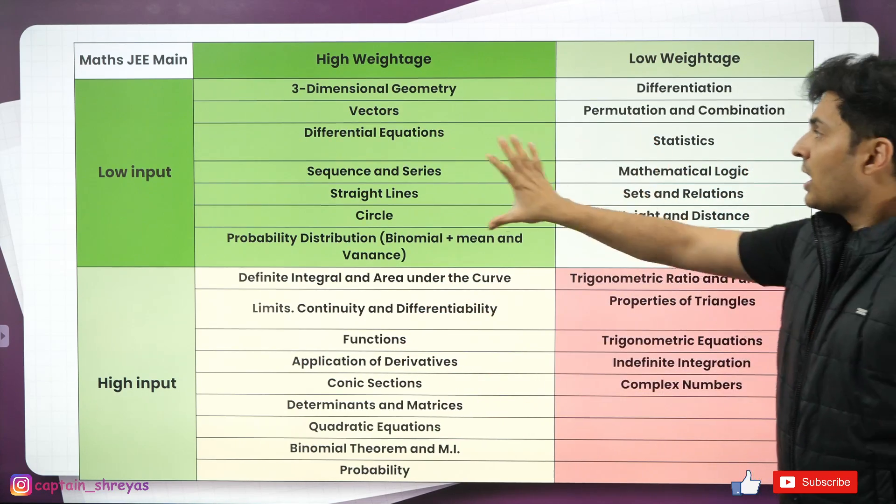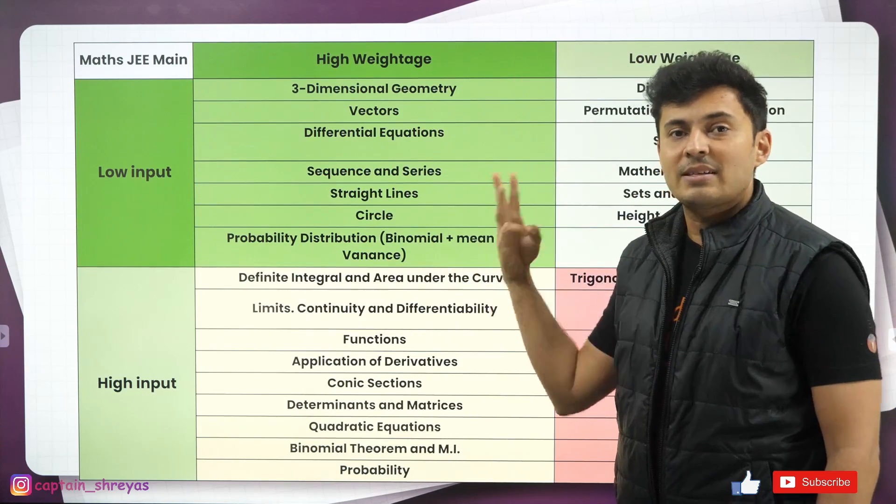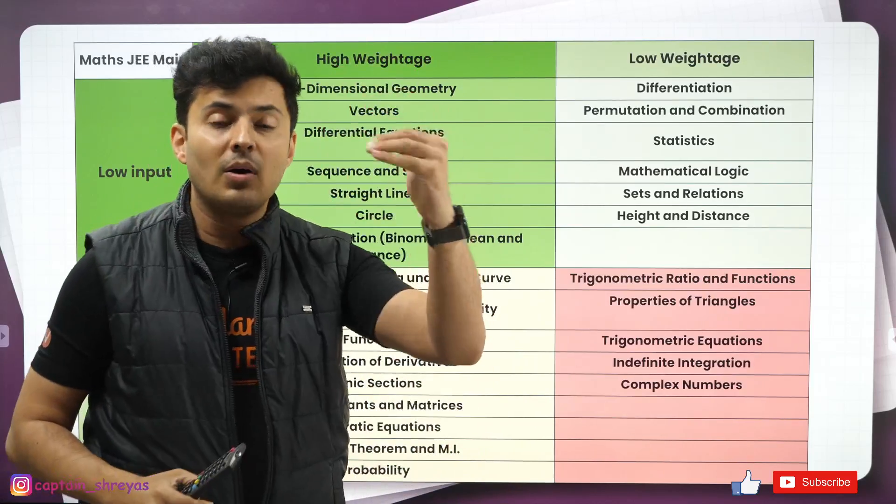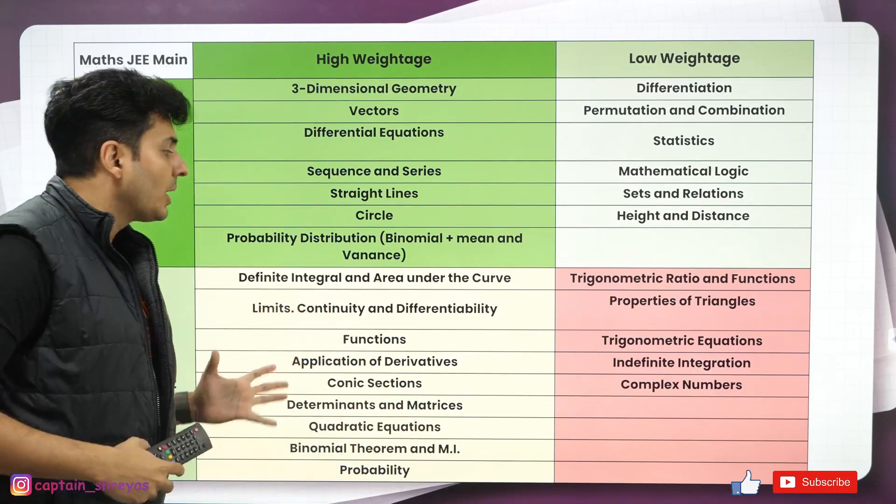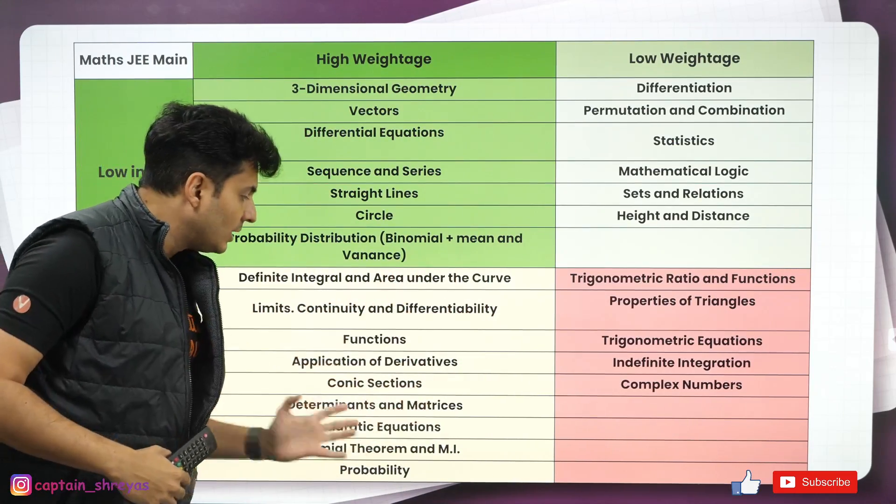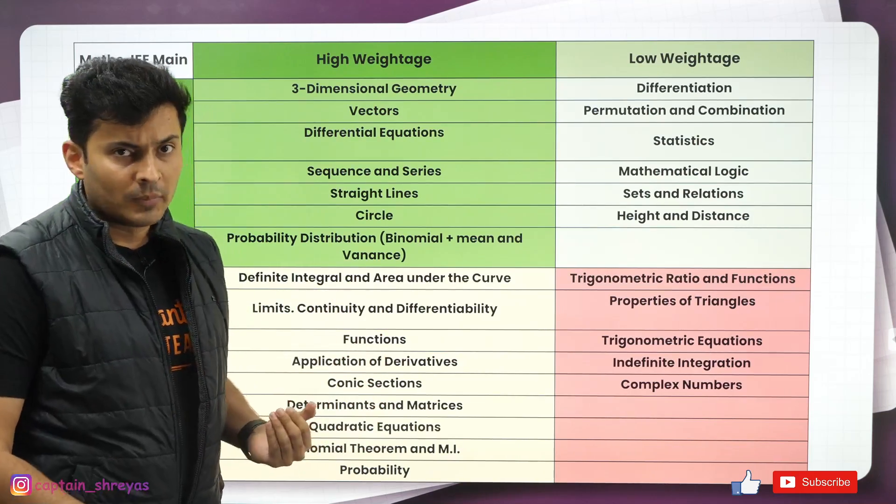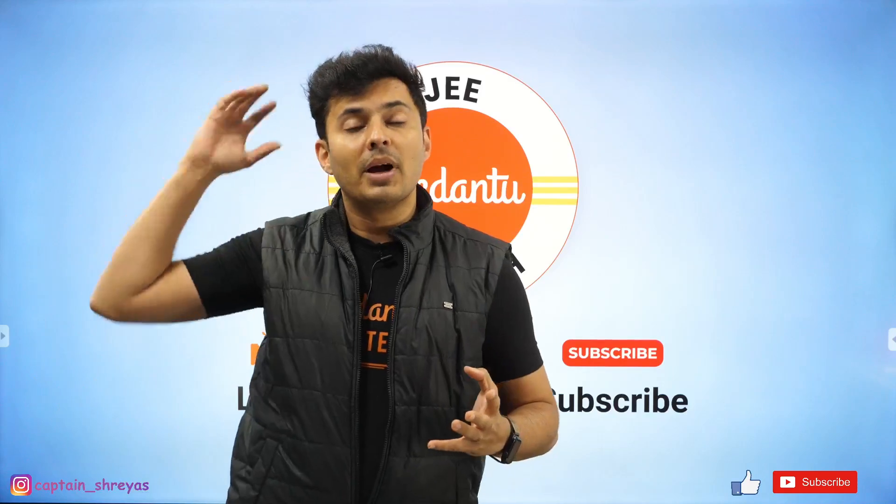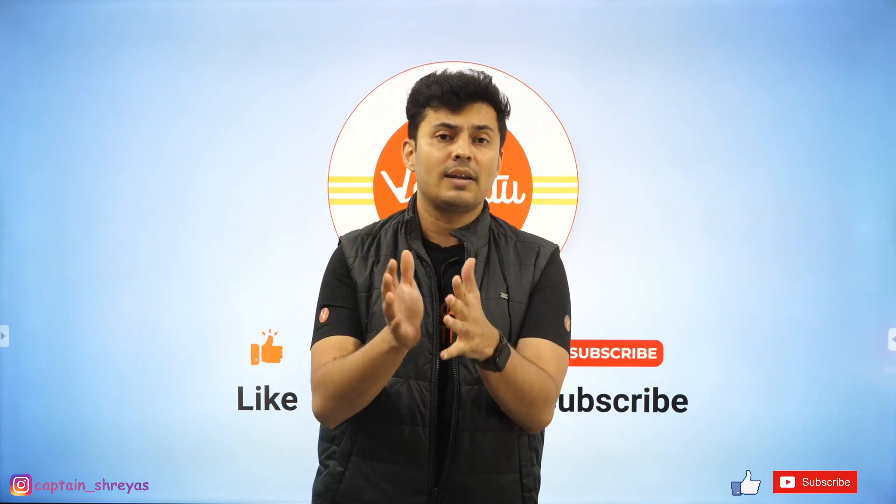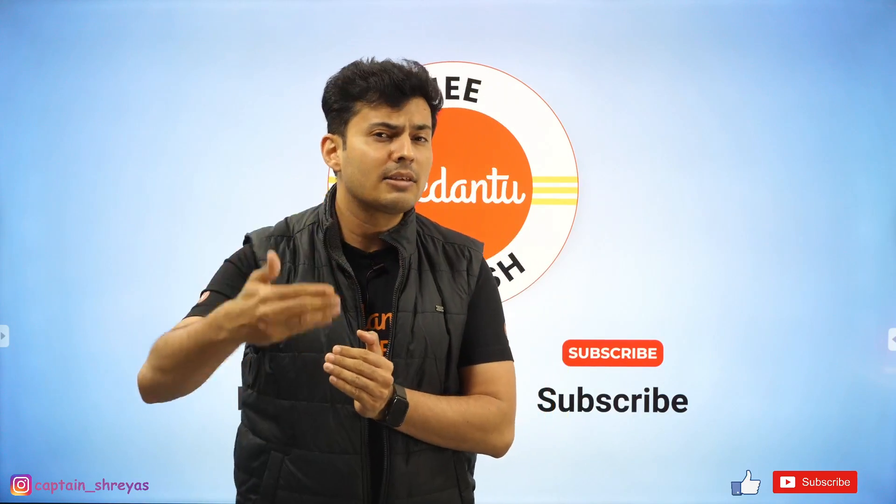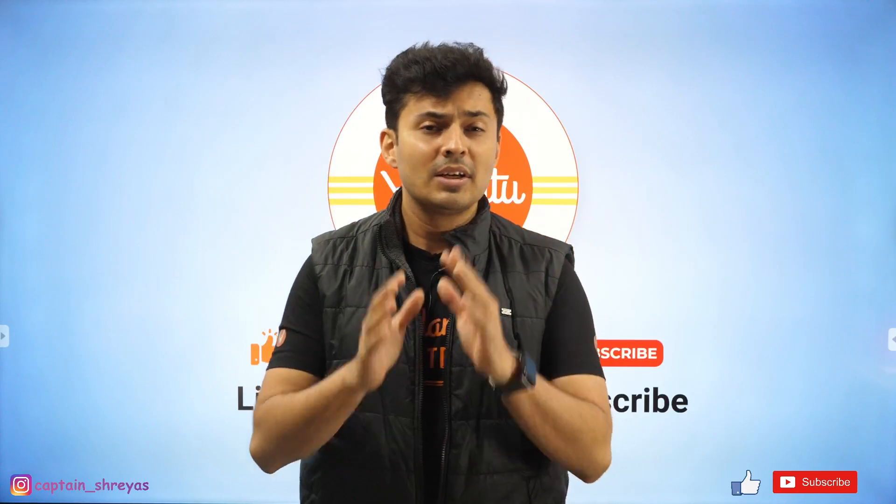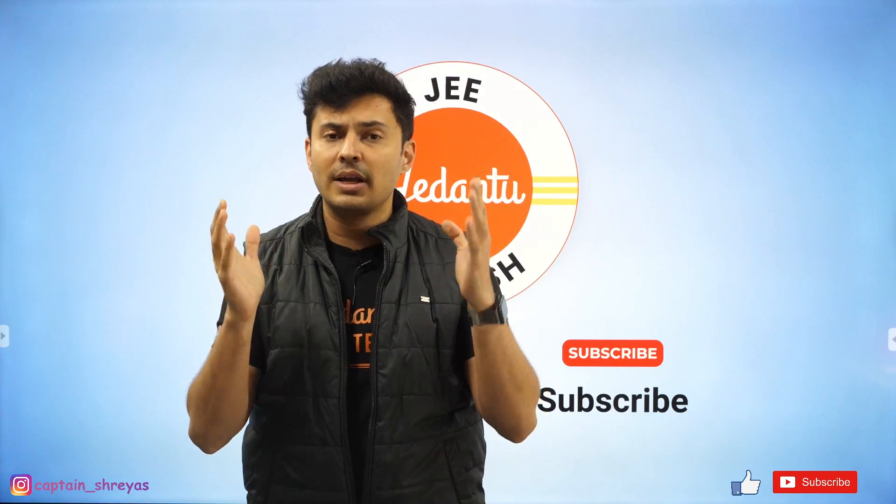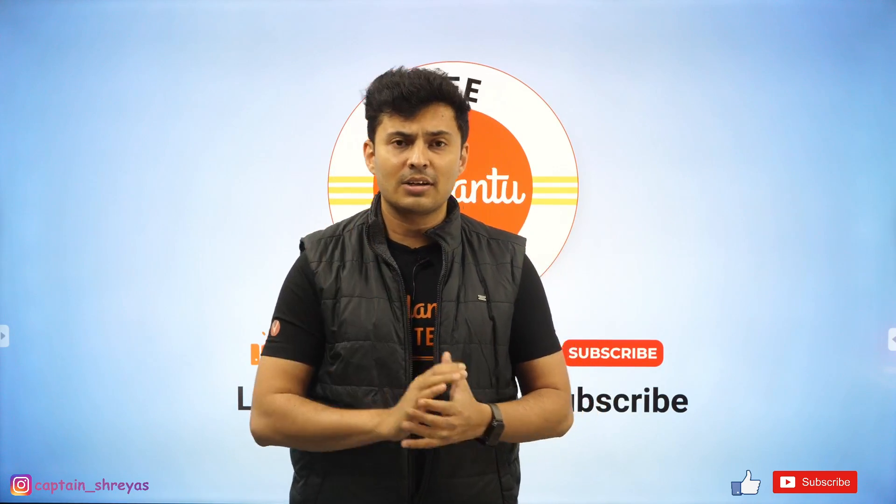So at least if this much part is done from physics, chemistry, maths, you have a very good chance of getting not just 90 percentile but above 95 percentile and you can push yourself into these topics as well to boost your score up. So these were the topics that you can skip and you must do and also the strategy of how you should arrange the topics and what is the exact order of studying the topics, especially when there is very little time. I hope you guys found this session very informative and this was a very short and sweet session.